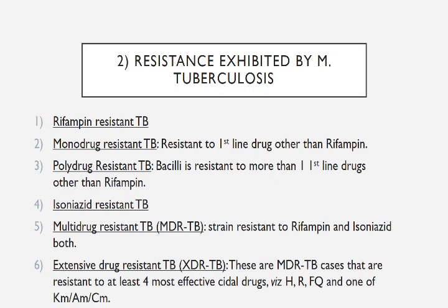Resistance exhibited by Mycobacterium tuberculosis: First is rifampin-resistant TB. Second is monodrug-resistant TB, which is resistant to first-line drugs other than rifampin. Third is polydrug-resistant TB, where the bacilli are resistant to more than one first-line drug other than rifampin. Fourth is isoniazid-resistant TB. Fifth is multi-drug resistant TB (MDR-TB), where the strain is resistant to both rifampin and isoniazid. Sixth is extensively drug-resistant TB (XDR-TB) — MDR-TB cases which are also resistant to at least four of the most effective drugs, including isoniazid, rifampin, a fluoroquinolone, and one of kanamycin, amikacin, or capreomycin.